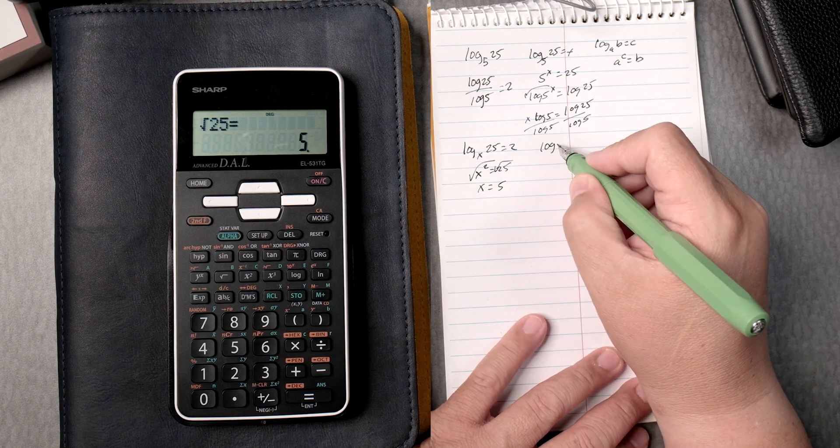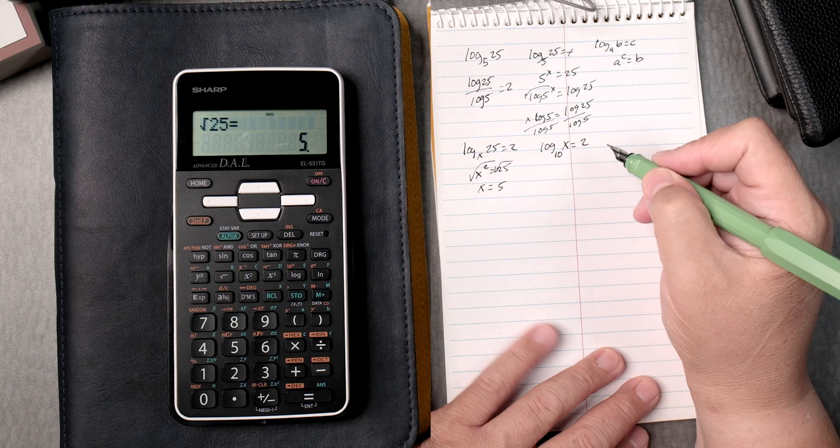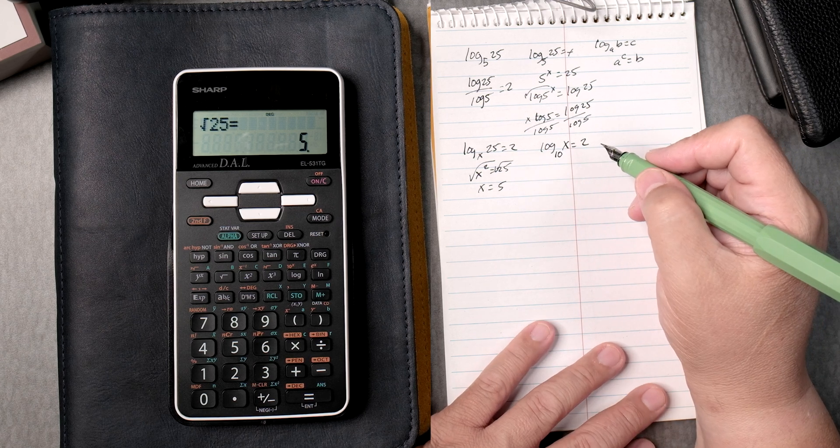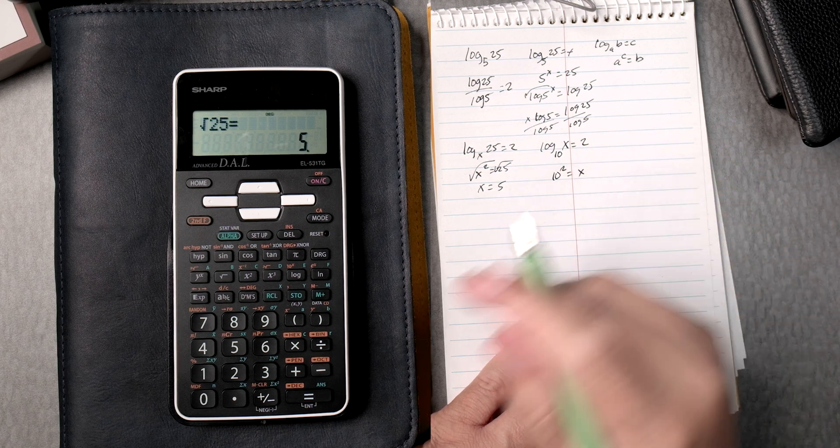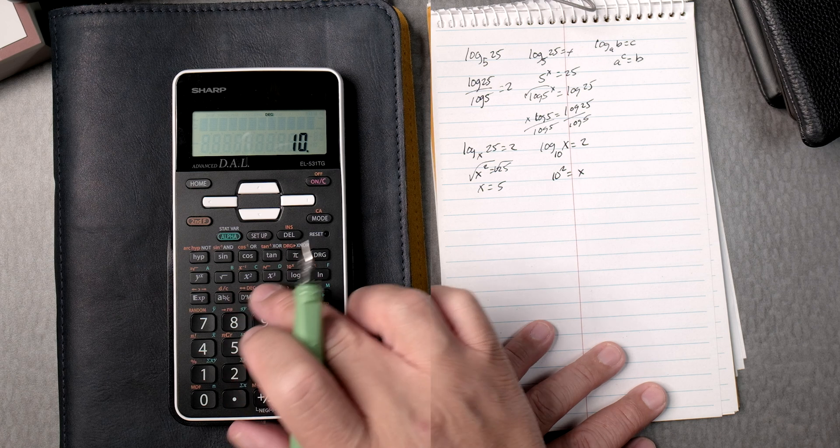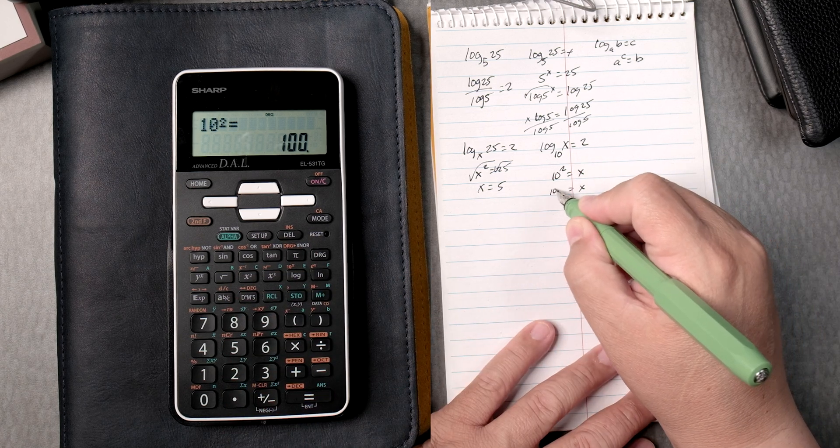The log of base 10, x equals 2, right? So that's 10 squared equals x, and so 10 squared equals 100. Okay. Got that.